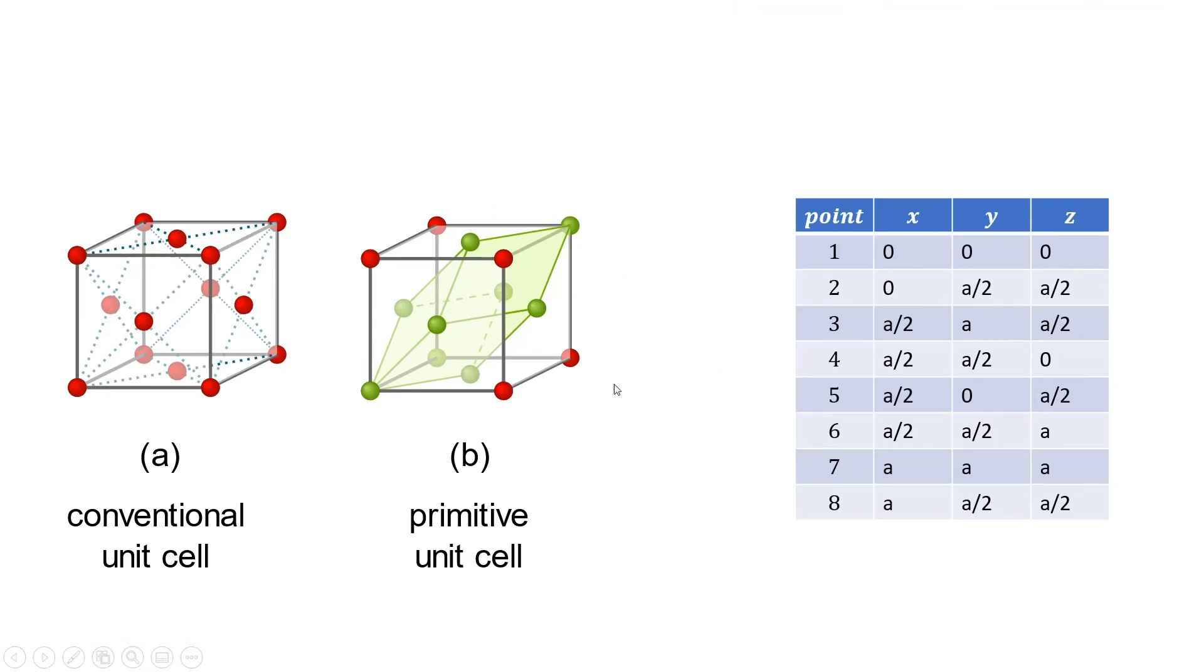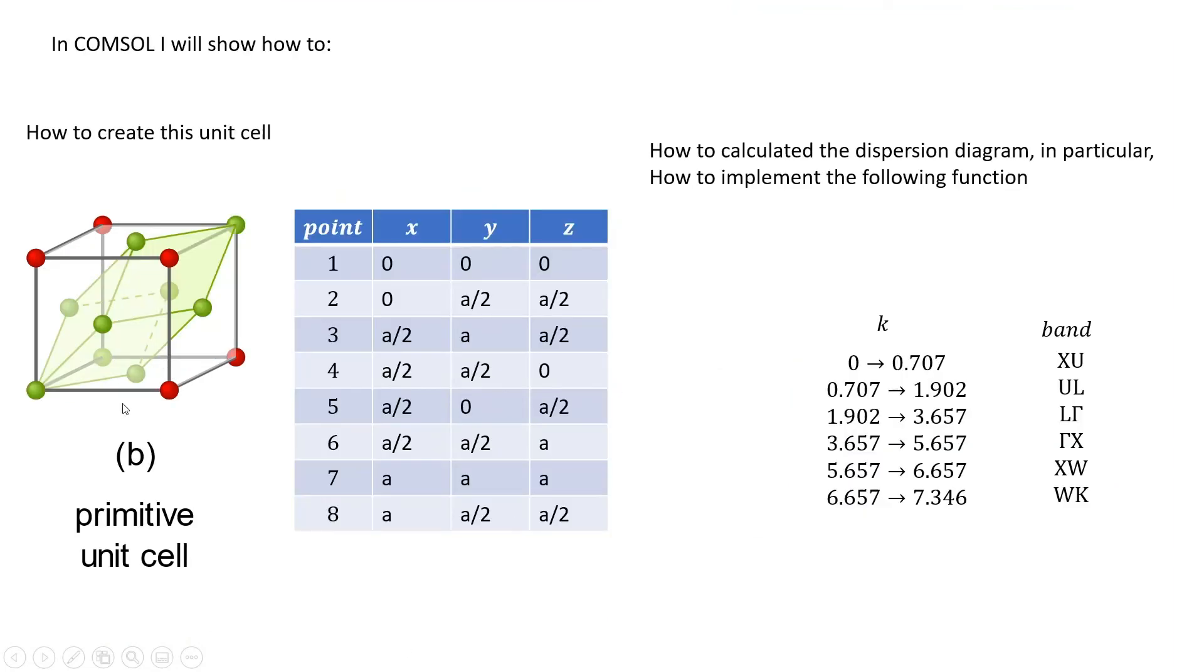What I will do in COMSOL actually is to show you how to create such a unit cell, given that I already know the vertices of this primitive unit cell. So I define point 1 here at this one, point 2 this one, 3, 4, and then 5, 6, 7, 8.